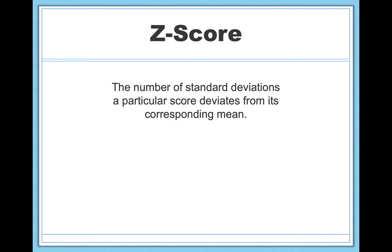Think about why this is useful. If I took a test and I told you that I scored a 122 on that test, you would really have no idea whether I did well or poorly. You would need to know more information — for example, how many points the test is out of and how other people tended to do. This is where the z-score comes into play, because it allows me to factor out all that information. I don't need to know the mean or the variability or anything about the test if I know the z-score.